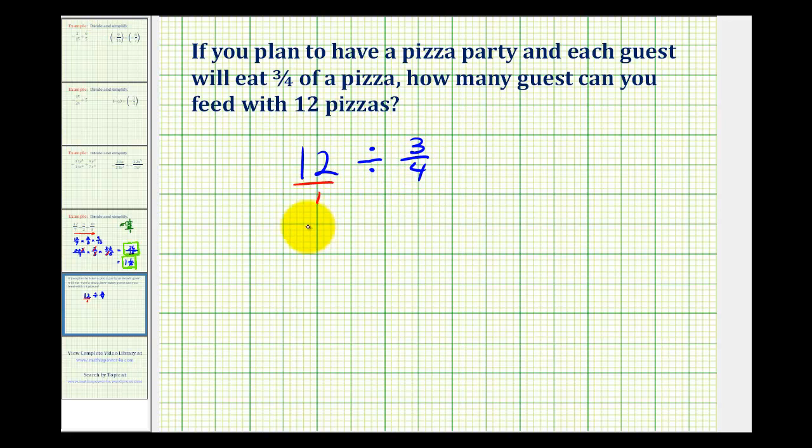So as a multiplication problem, this would be twelve over one times four over three. And before we multiply, we should simplify. Notice the twelve and the three have a common factor of three, and just to show that, we can write twelve as four times three over one times four over three. And here's the common factor of three that simplifies to one.